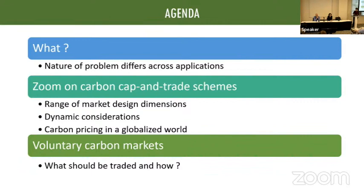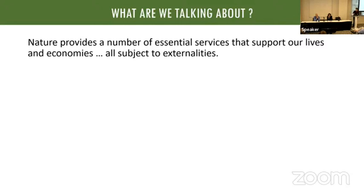So what are we talking about? It's important to realize that environmental markets are not only about climate change. Climate change, obviously, is a big thing, but nature provides a lot of services to us — regulating services like the carbon cycle, the water cycle, providing food, different supporting services like soil formation. All of these things that nature provides are subject to large externalities, which is the reason why we may have an issue and may need to think about correcting for these issues.